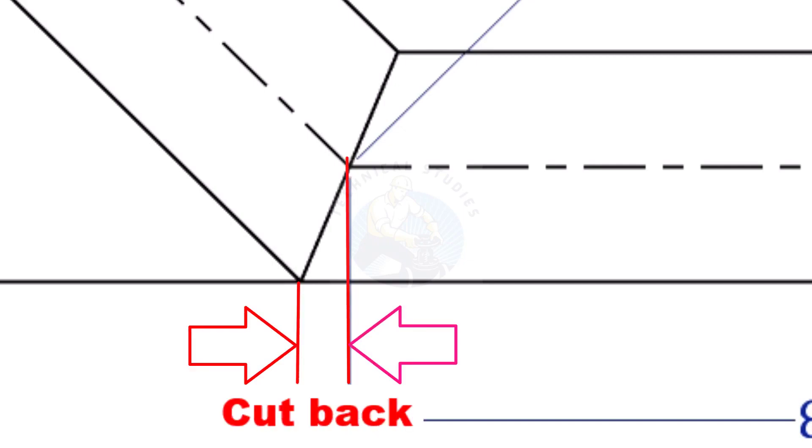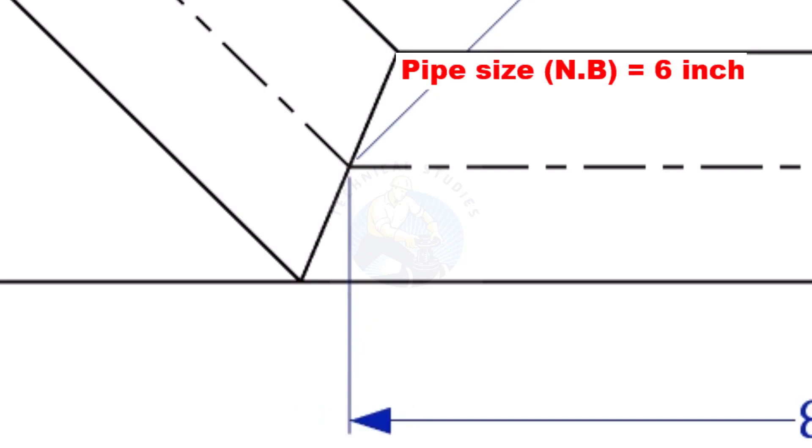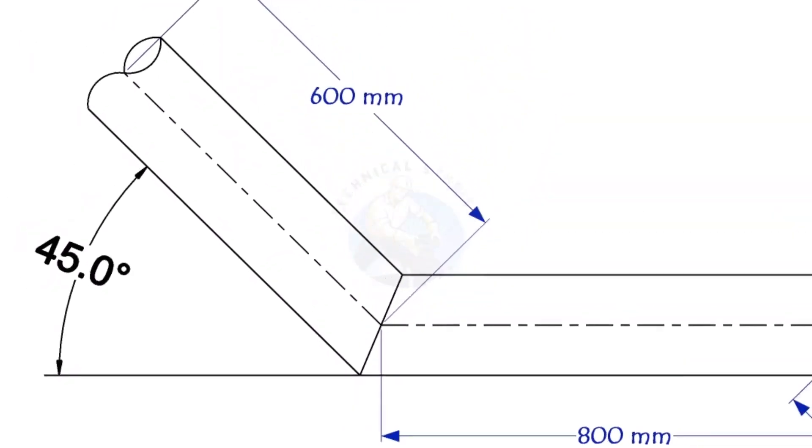To mark a miter cut, we need to know the cutback of the miter. In this offset, the nominal diameter of the pipe is 6 inch. The angle of the miter is 45 degrees.